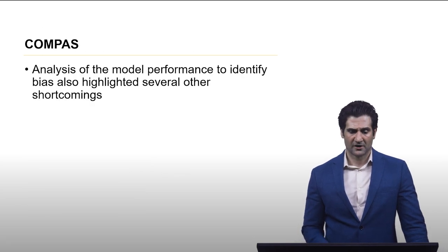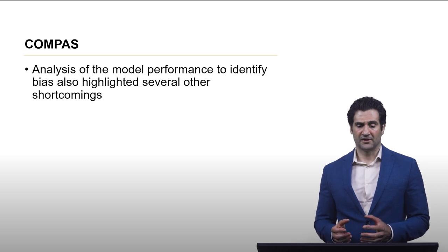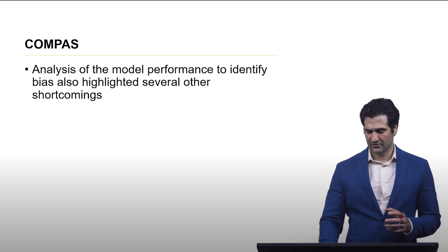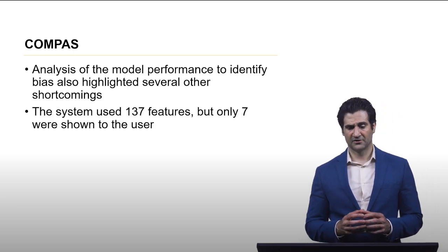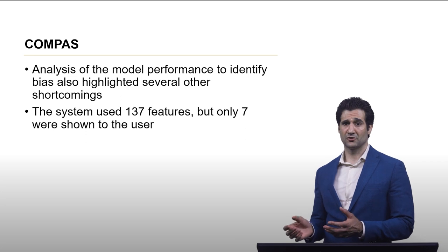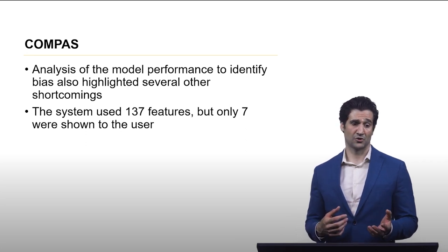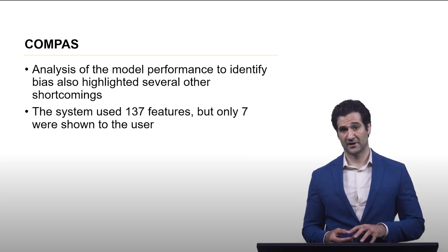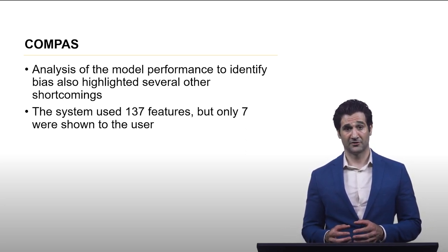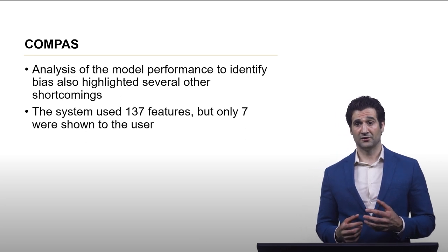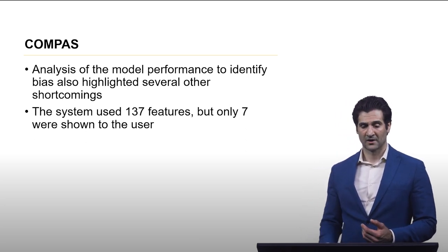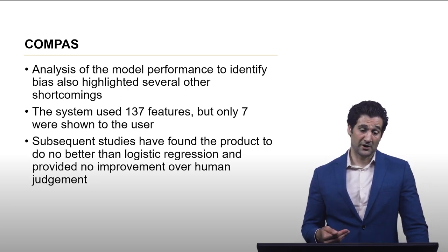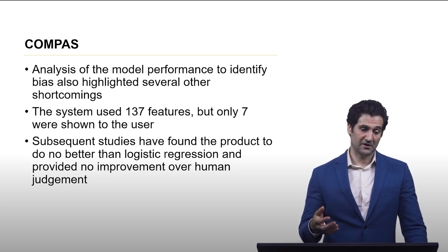In the analysis of this, it highlighted several shortcomings, one of which is that the system used 137 features but in the user interface only seven of them were shown to the user. Many of these features were actually derived from survey information that the offenders would fill out and included arrest information about friends and family.